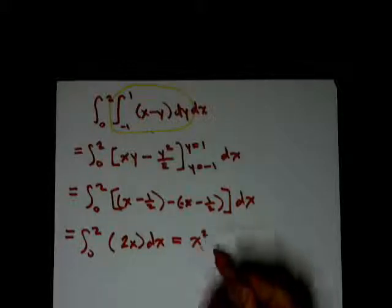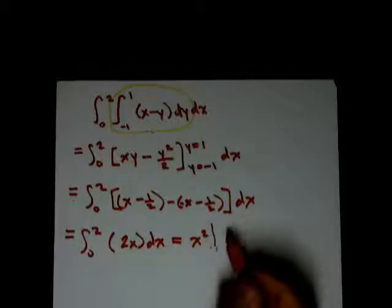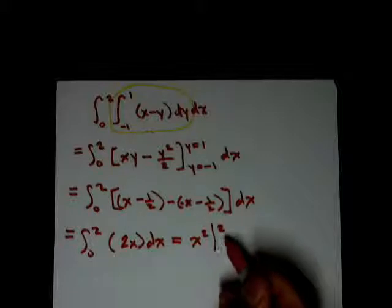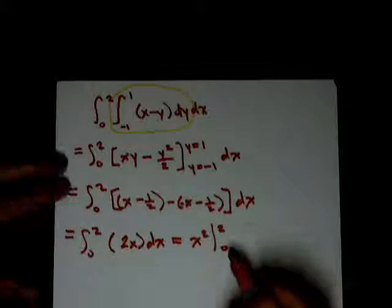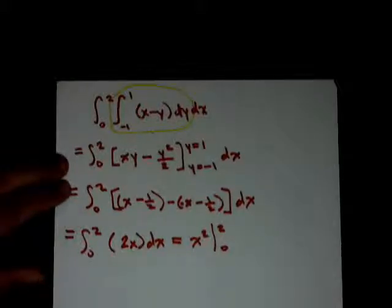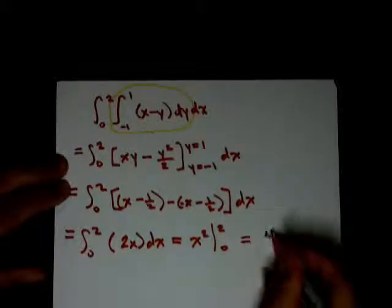And we're going to get x squared. And we're going to evaluate at the limits of integration, the upper is 2 and the lower is 0. And this is going to equal 4.